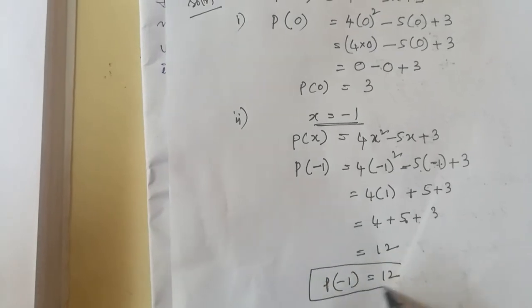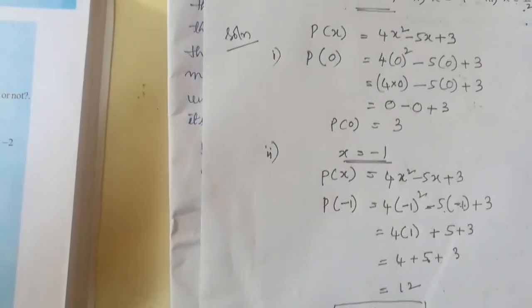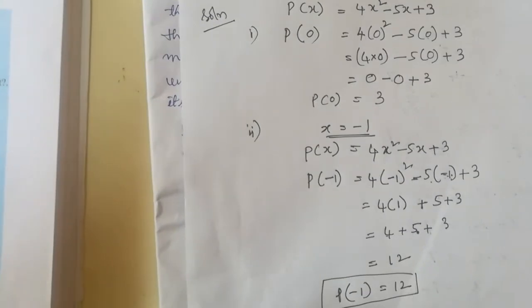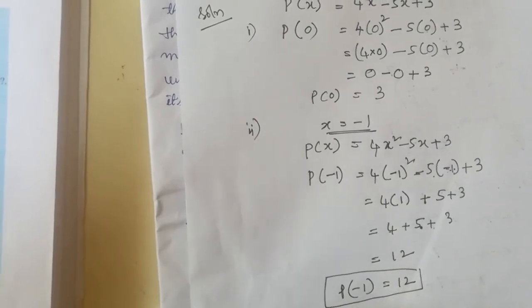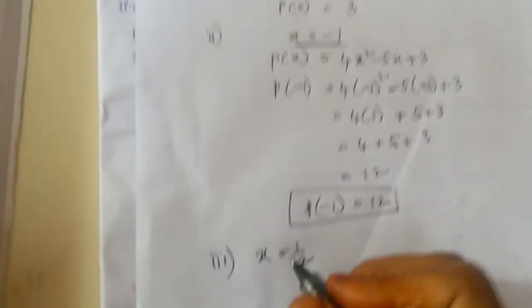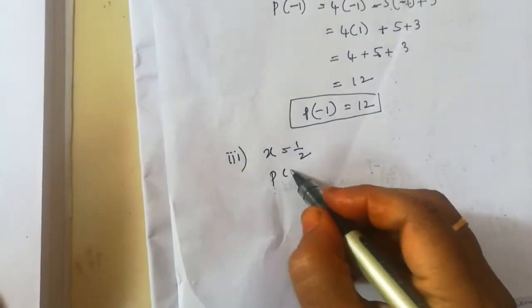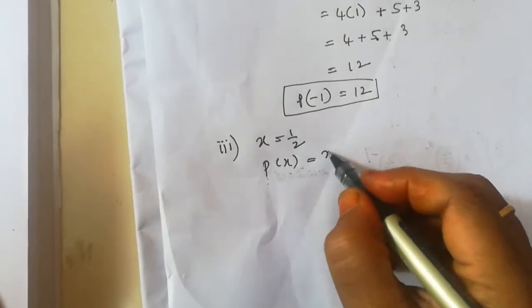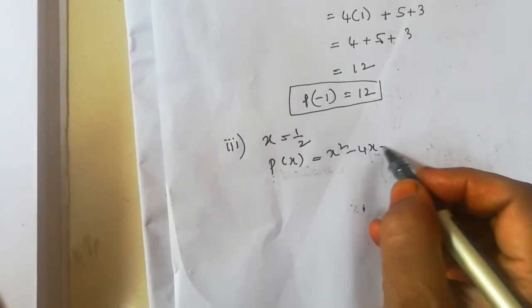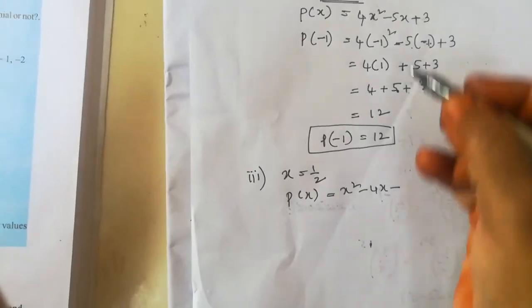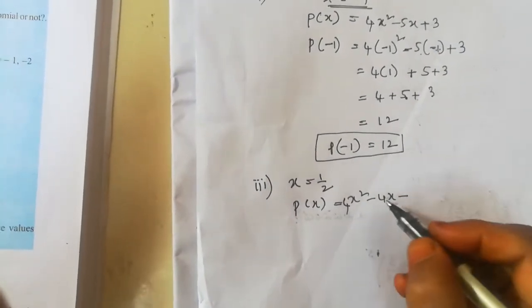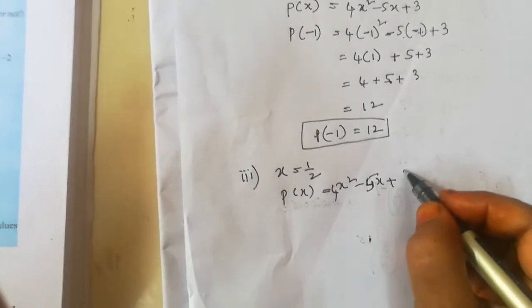Now I will show x equals 1/2. The equation is P of x equals 4x squared minus 5x plus 3. So P of 1/2: in place of x, we are writing 1/2.